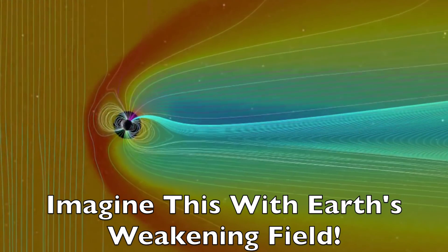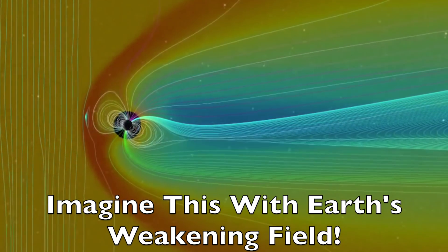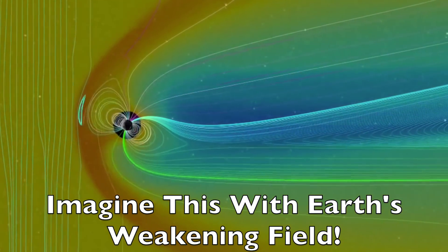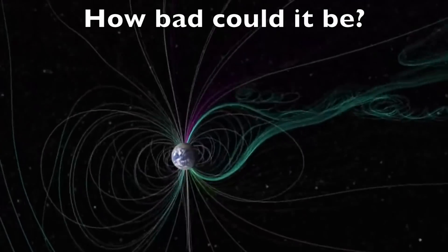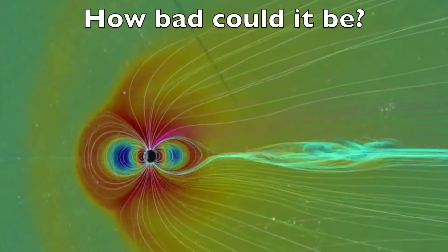We already know this happens to a small degree with both the fields and the Van Allen belts as relativistic electrons have been detected from their being pushed into the atmosphere by modern-day space weather events.